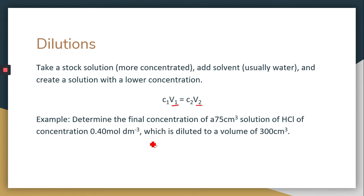So in our example here, determine the final concentration of 75 centimeters cubed solution of HCl. And then it gives us the concentration. And it says it's diluted to a volume of 300 centimeters cubed. So this is our C1 and our V1. And then we're diluting it to 300. So what is the final concentration?